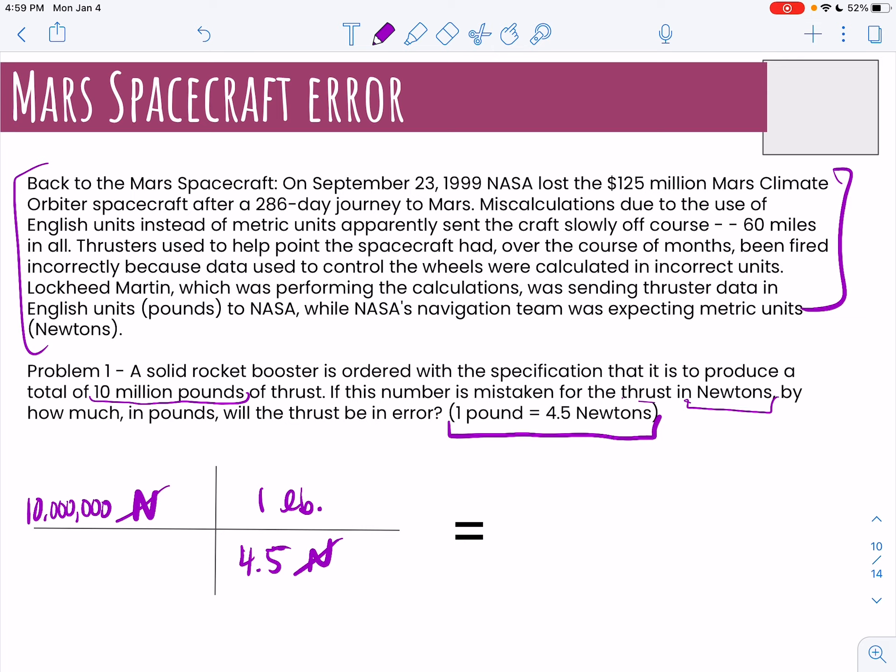So 10 million divided by 4.5 newtons is 2 million, basically 2,222,000 repeating. So really, if they did that, they wanted 10 million pounds but they were only getting out about 2 million pounds, roughly about 2 million.